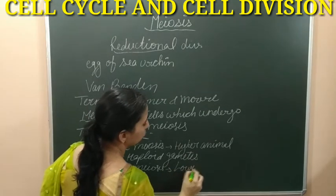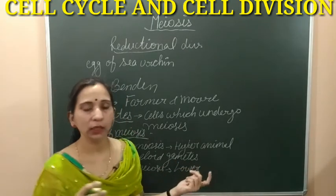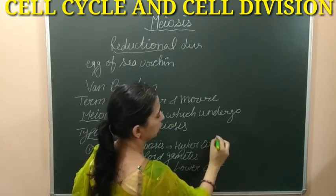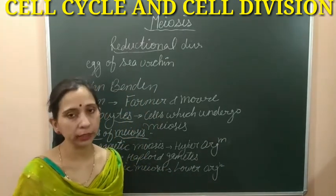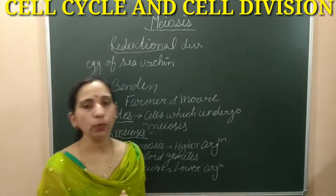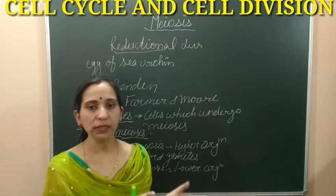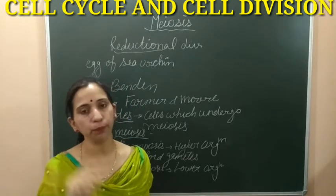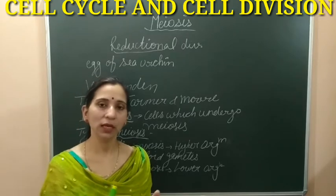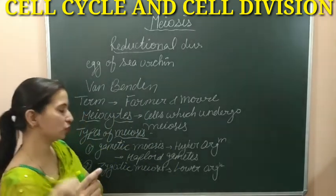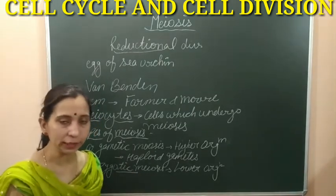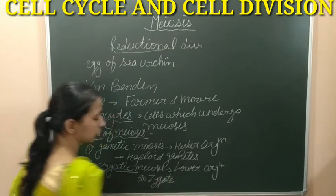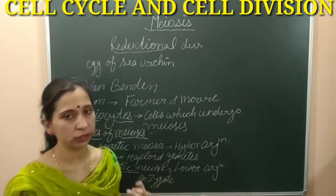The second type of meiosis is zygotic meiosis. Zygotic meiosis happens in lower organisms, like the algae Cladophora for example. In these organisms, the parent body is haploid. This haploid parent body forms haploid gametes, and when these haploid gametes fuse together during reproduction they form a diploid zygote. This diploid zygote then goes through meiosis to form haploid cells, and these haploid cells behave like an individual. So when meiosis happens in the zygote, this is known as zygotic meiosis — the diploid zygote undergoes meiosis to form haploid cells.